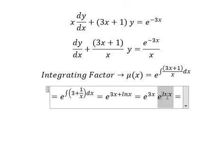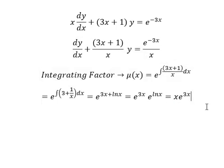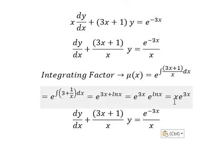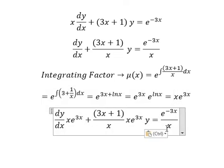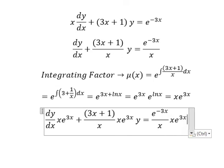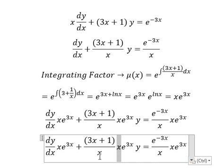e to the power of ln x gives us x. That means we multiply both sides by this. So x and x simplify. We simplify this one with this one, we have e to the power of 0, which is 1.